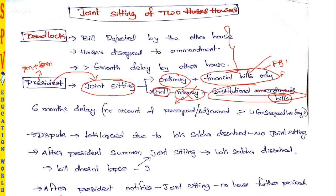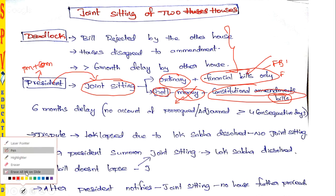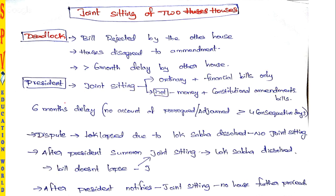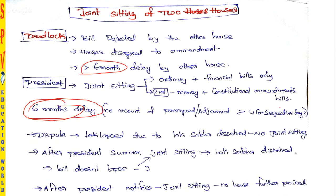Regarding the six-month delay in condition three: they don't consider situations where the house is adjourned for more than four consecutive days, because those days are gaps between sessions. Only working days are counted as the six-month delay.